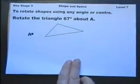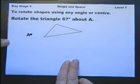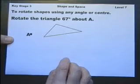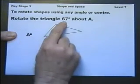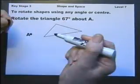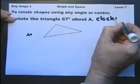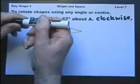To be able to rotate shapes using any angle or centre. So any shape—I've chosen a triangle. We're going to rotate this shape about any point. I've chosen that point there, and I'm going to rotate it 67 degrees about A. The only thing I've missed out is the direction, so we'll go clockwise. Now my felt tip is a little thick, so we'll do this in pencil.